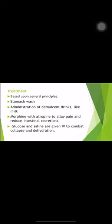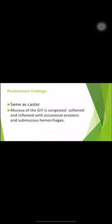The fatal period varies from 6 hours to 3 to 5 days, leading to death. There is no specific antidote for Jamal Gota (Croton tiglium) poisoning; treatment is based on general principles: stomach wash, administration of demulcent drinks such as milk, alkalis, and morphine with atropine to relieve pain. Glucose and saline are given to combat dehydration and to resuscitate from respiratory and circulatory shock.